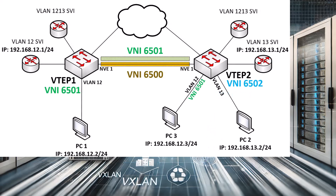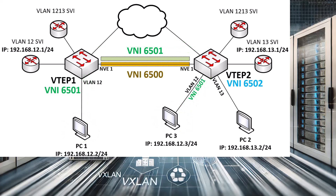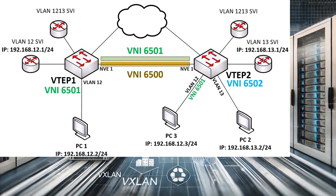Here's another example that throws an additional setup into the mix. We have added PC3, which exists on VNI 6501 but is connected to VTEP2. If PC1 wants to communicate with PC3, which is on the same subnet and the same VNI, no routing will take place, nor will the transit VNI of 6500 be used. Only bridging will take place across VNI 6501. For this reason, VNI 6501 does exist across the VXLAN topology, on both VTEPs 1 and 2, and both VTEPs are associated with this VNI.